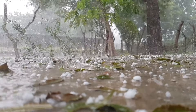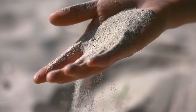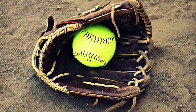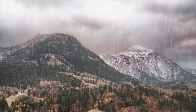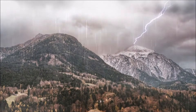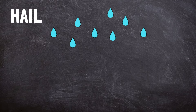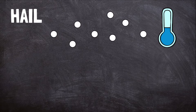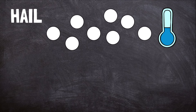Hail is the fourth type of precipitation. Hailstones are hard balls of ice — they can be as small as a grain of sand or as big as a softball. Although hail is ice, it does not happen when it's cold outside like snow and sleet. Hail actually forms during summer thunderstorms. Hail happens when water droplets are caught in the rising air, or updraft, of a thunderstorm. They rise high into the sky where it's very cold and freeze into small balls of ice. The small hailstones fall and then get caught in the rising air once more. Each time this happens, the hailstone gets bigger until it finally falls to the ground.